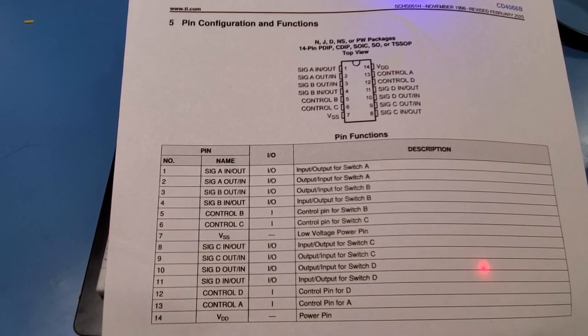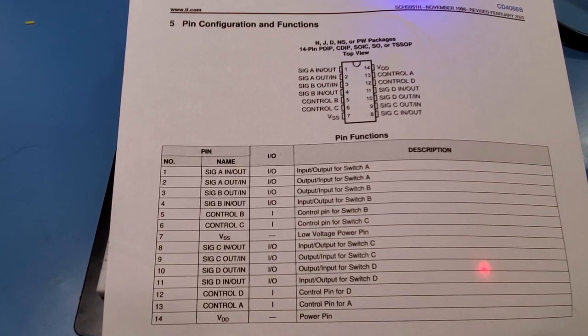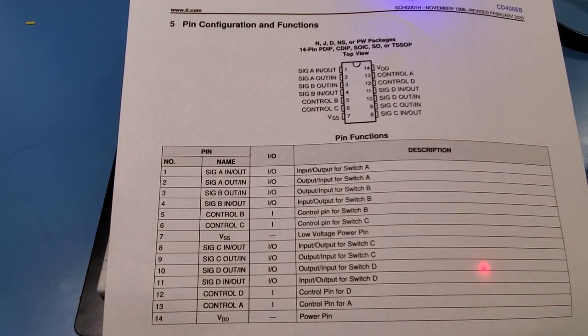The CD4066 is a quad bilateral CMOS switch and I'll include a link to the data sheet you're looking at here below. Each of the four switches in the package are independently controlled and they can pass digital or audio signal. Now know that any signal that you pass must have voltage between VDD and VSS. So when we get to the circuit below you'll see that those audio signals are mid-rail biased.